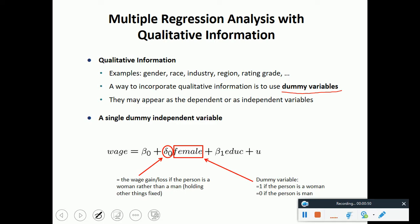If we look at this example, a single dummy independent variable. Wage is the dependent variable and we have the independent variables as female, education, etc.